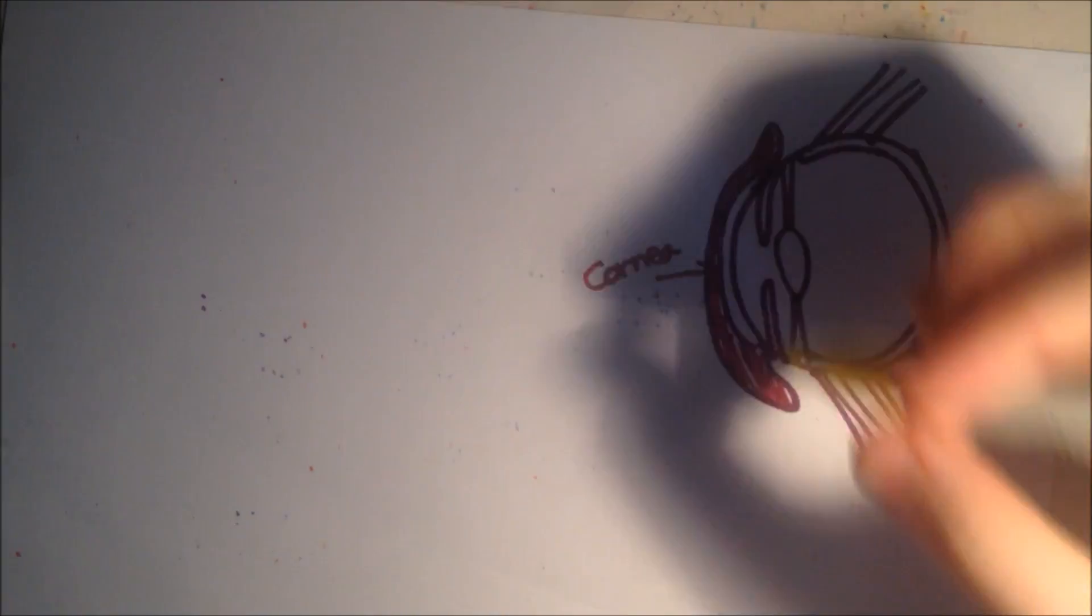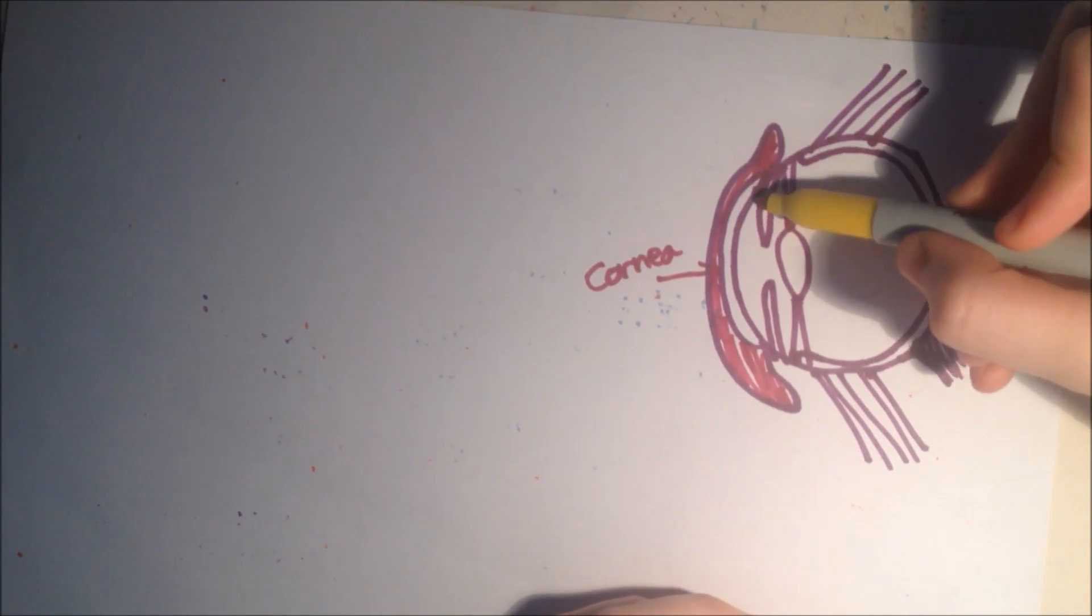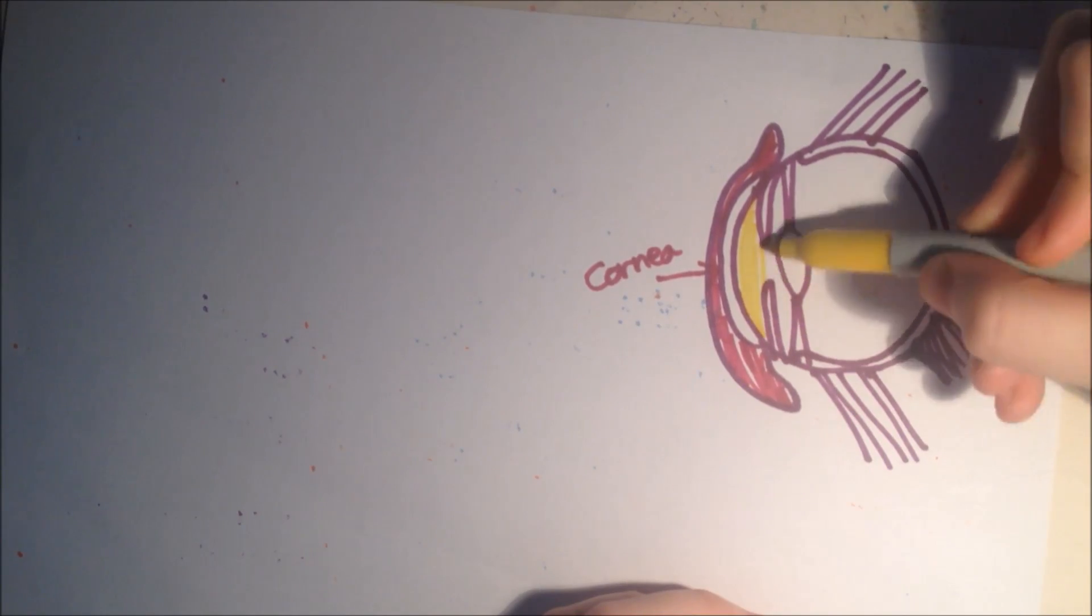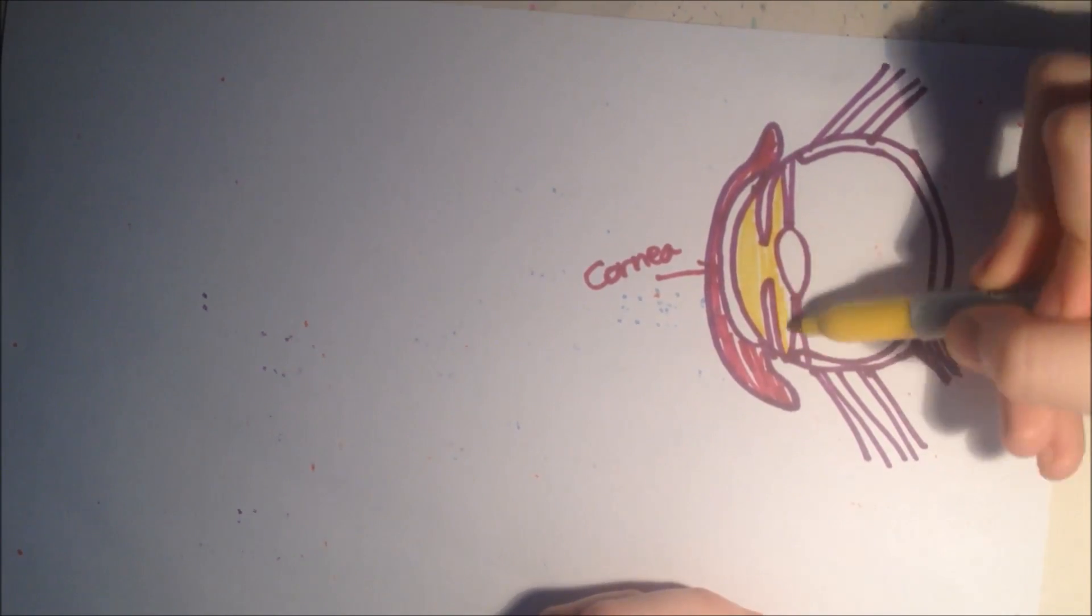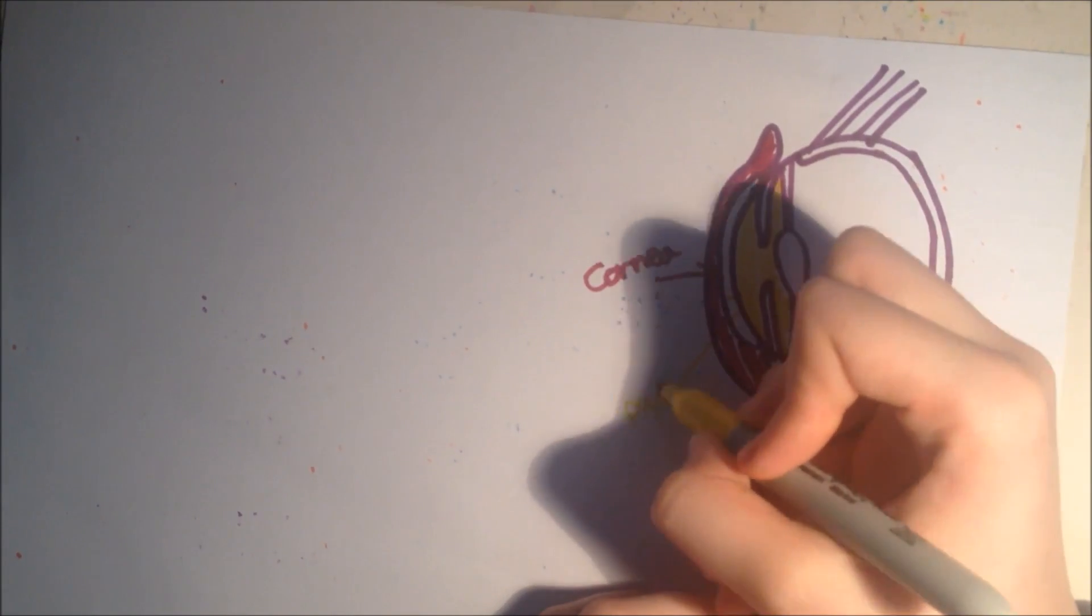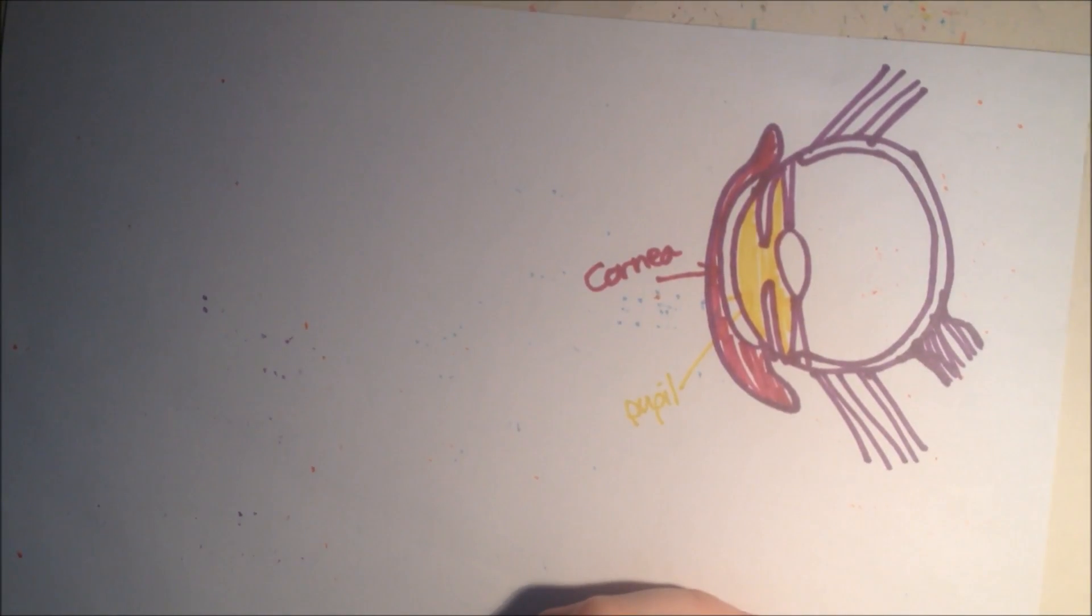It controls how much light goes into the eye. Next we have the pupil, which is all of this section here. So this is the pupil. And this is just the hole in the middle of the eye.